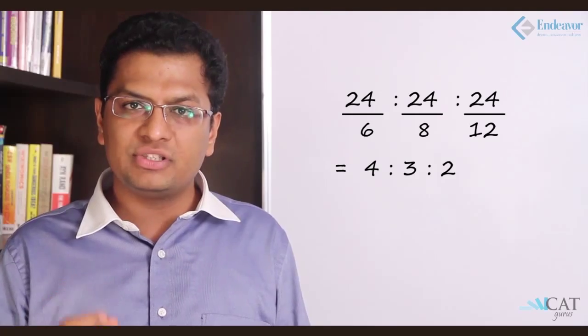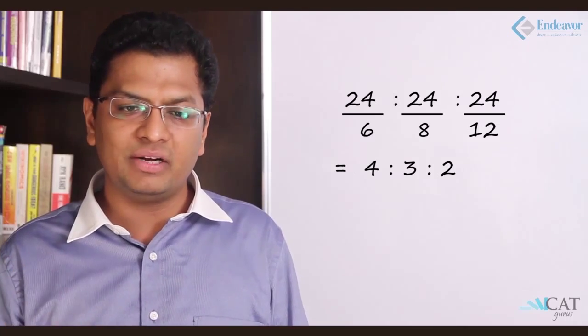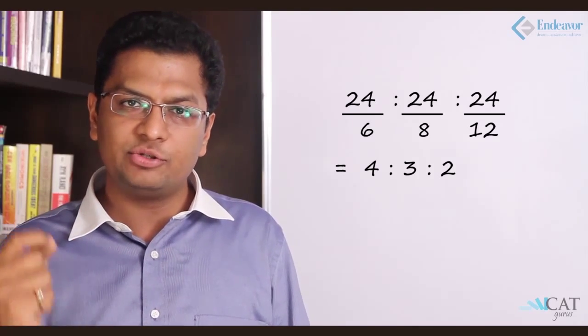So the ratio will be 1 by 6 is to 1 by 8 is to 1 by 12. That is the quantum of work they are completing in a day. Now based on the same ratio they should get their earnings. So let's put them into numerators now. So let's take their LCM. So LCM is 24. So 24 upon 6, 24 upon 8, and 24 upon 12. That becomes 4 is to 3 is to 2.